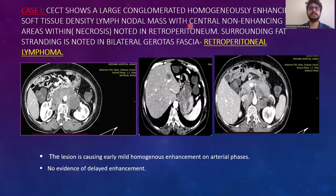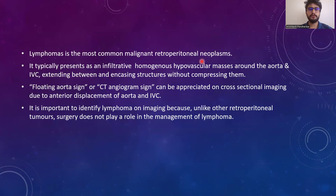Case 1: CCT shows a large conglomerated homogeneously enhancing soft tissue density lymph nodal mass with central non-enhancing necrotic areas seen in the retroperitoneum. Surrounding fat stranding is noted in bilateral Gerota's fascia. This is a case of retroperitoneal lymphoma. The lesion causes early mild homogenous enhancement on arterial phases with no delayed enhancement. Lymphoma is the most common malignant retroperitoneal neoplasm, typically presenting as infiltrative hypovascular masses around the aorta and IVC, encasing structures without compressing them. The floating aorta sign can be appreciated due to anterior displacement of the aorta and IVC. Importantly, unlike other retroperitoneal tumors, surgery does not play a role in the management of lymphoma.